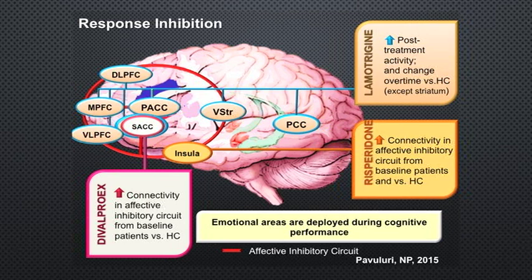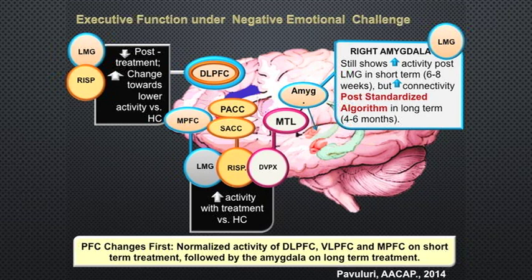Emotional areas are deployed even during cognitive performance — this is a response inhibition task, which is cognitive, and yet all these emotional areas are involved. With the affective Stroop task using words like 'brave,' 'rich,' 'jerk,' 'stupid,' the medial prefrontal cortex again increased with lamotrigine, and risperidone increased pregenual and subgenual anterior cingulate with the negative emotional challenge. Divalproex also engaged prefrontal cortex and medial temporal lobe. Similar areas of brain are engaged across paradigms. Notably, lamotrigine is very good for anxious, neurotic young patients who ruminate, are very depressive, and represent a lot of bipolar type 2. Medial prefrontal cortex keeps coming up as a very specific target for lamotrigine.